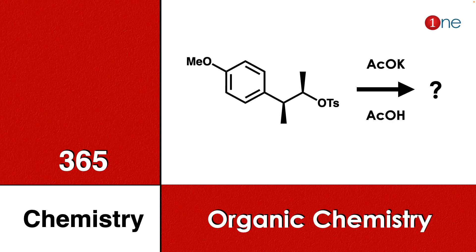Welcome to One Chemistry. This is the 365 Chemistry Series — organic chemistry questions for you. Here you have benzene with a methoxide side chain, a methyl group, and a tosylate leaving group. You are reacting with acetic acid and its salt. You have to find what will be the final product.